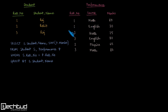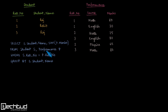Let us see what the query asks you to do. It says select the student name and the sum of their marks from these two tables — the Student table and the Performance table. This FROM clause will give you the Cartesian product of these two tables.